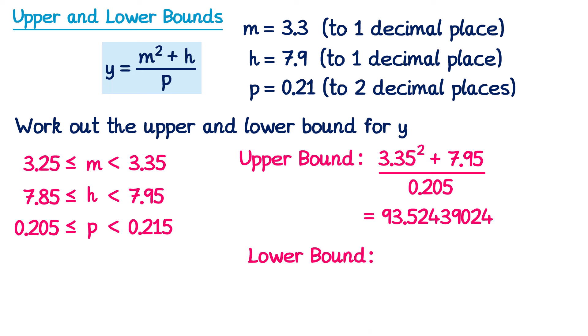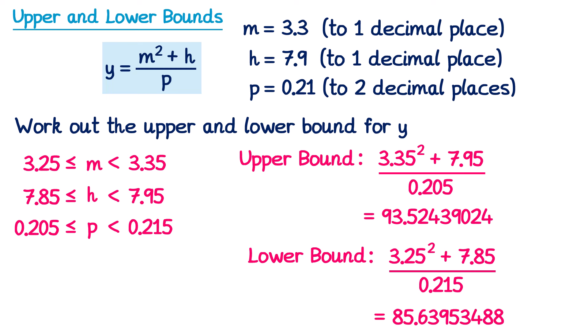For the lower bound, we want the numerator as small as possible and the denominator as large as possible. So we use the lower bound of m and h and the upper bound of p: (3.25² + 7.85) / 0.215. Typing this into a calculator gives the lower bound for y.